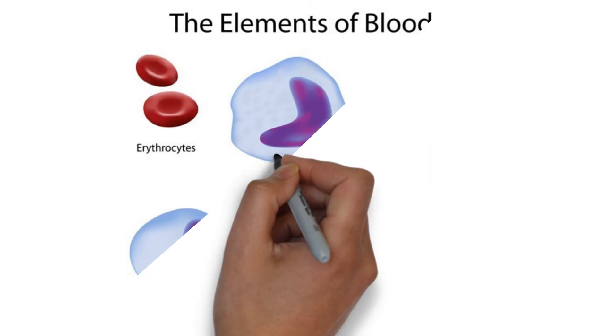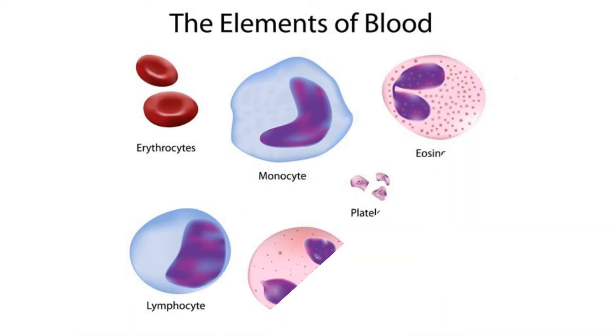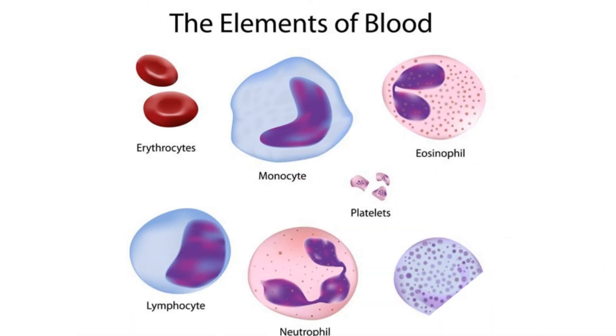In this picture you can see the formed elements of blood: red blood cells, eosinophils, neutrophils, basophils, monocytes, and platelets.